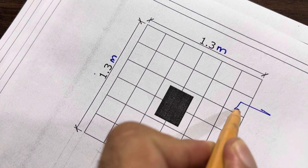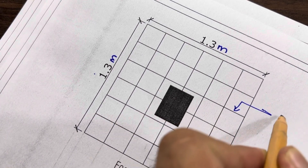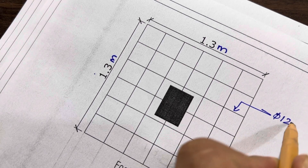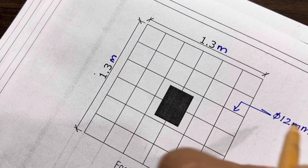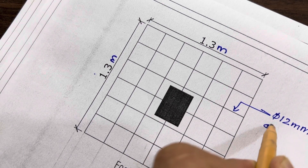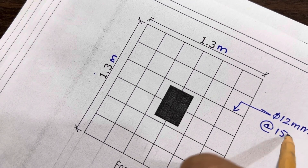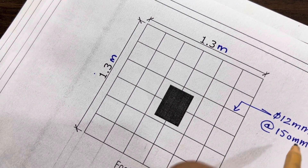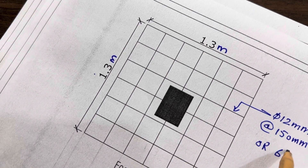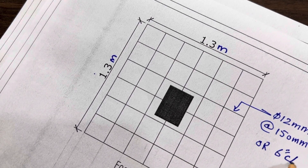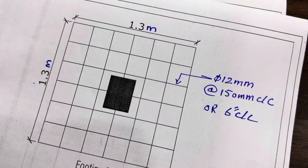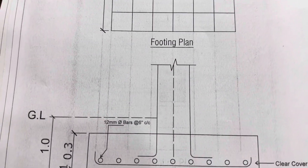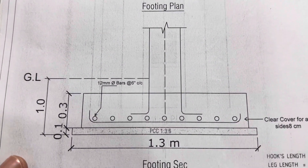We used 12 millimeter diameter steel rods with a spacing of 150 millimeter center to center, or you can say 6 inches center to center, for main bars. For distribution bars, the spacing is the same and the diameter is also the same. This is the plan for the footing.